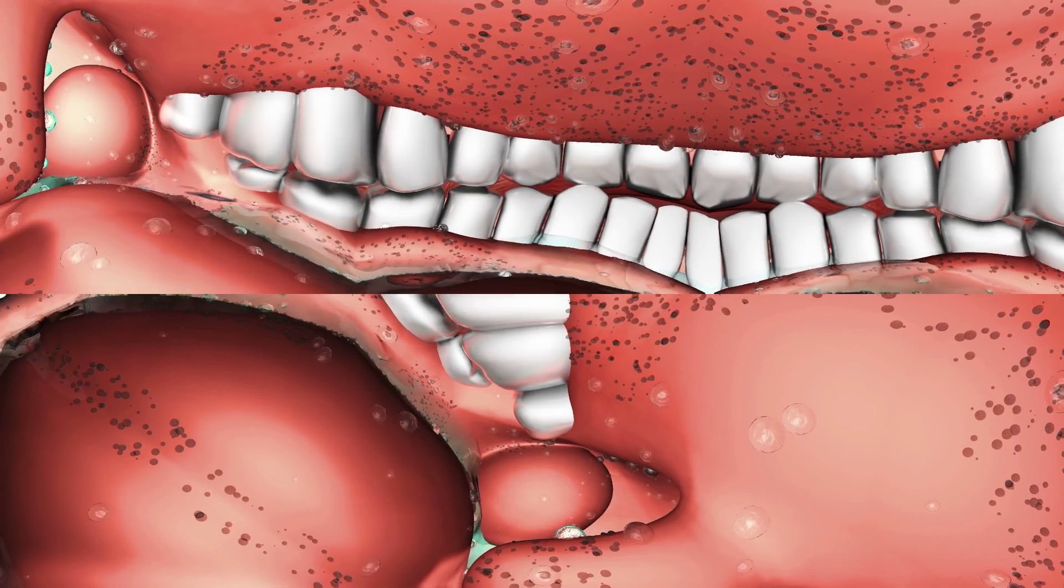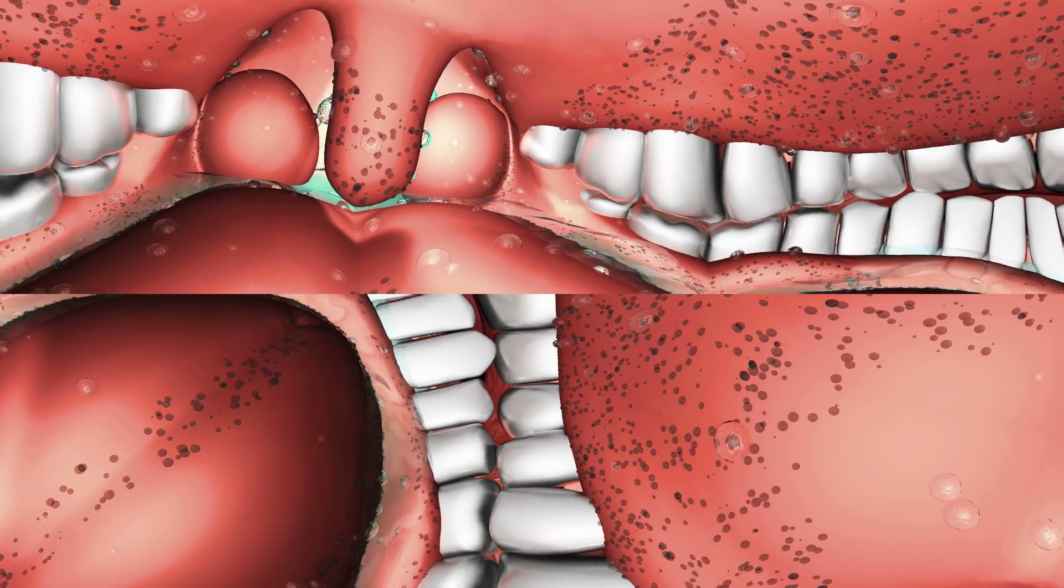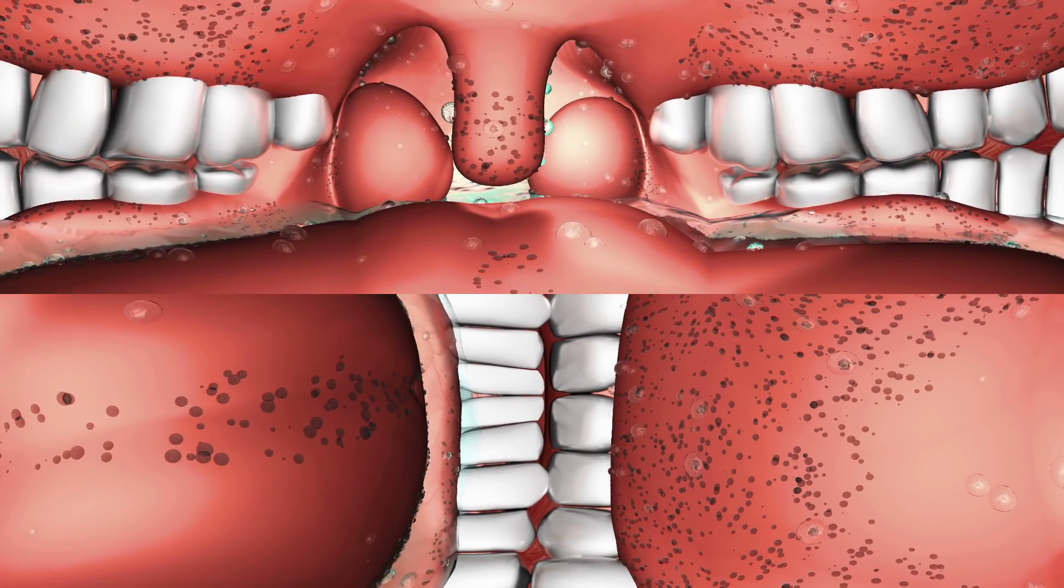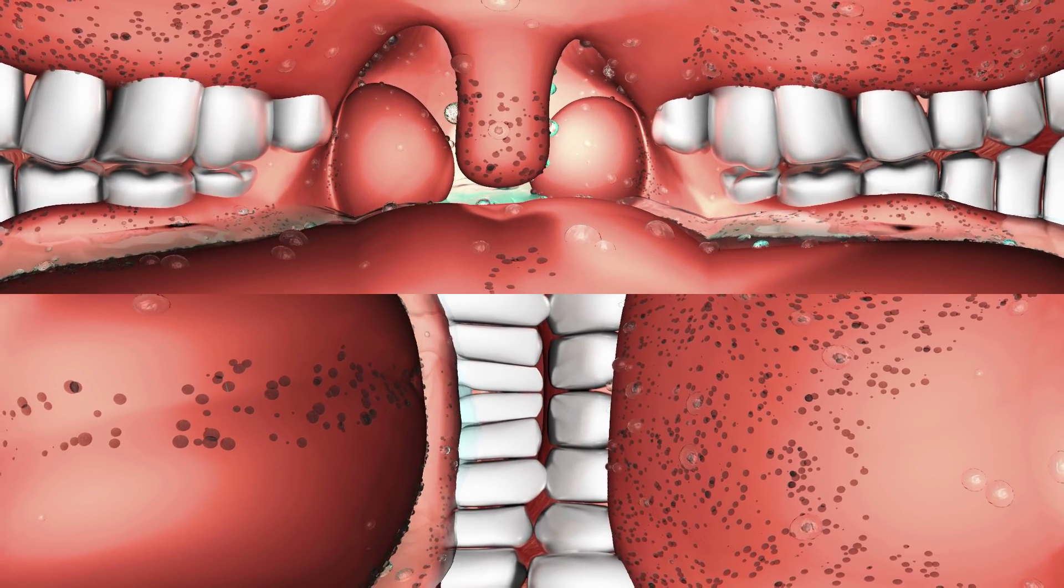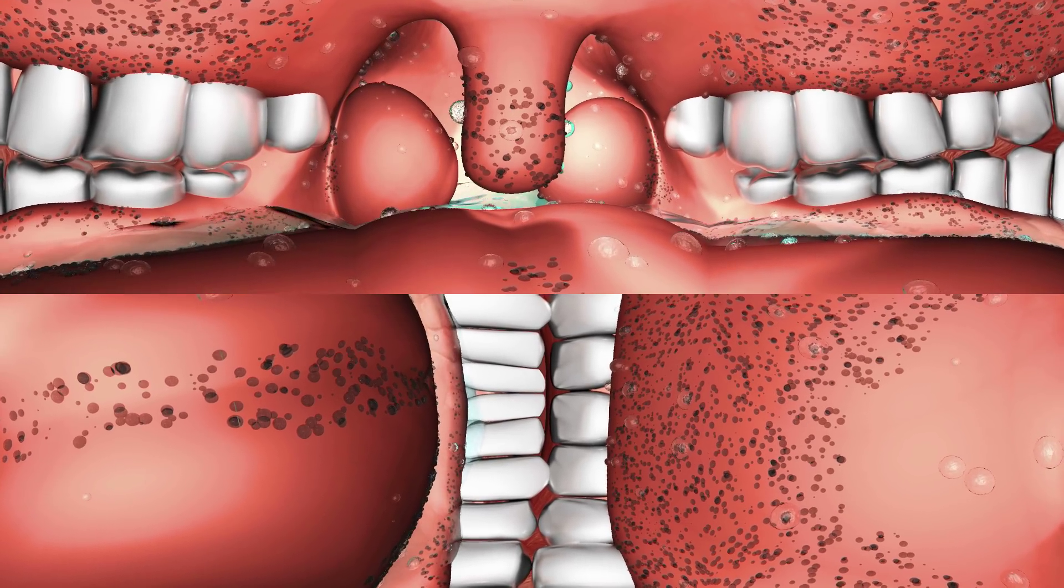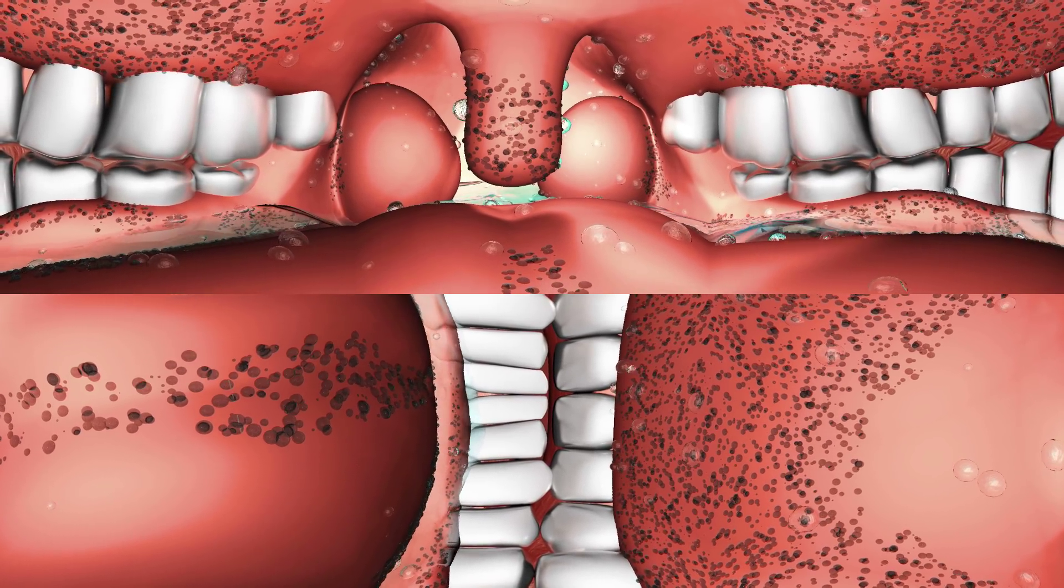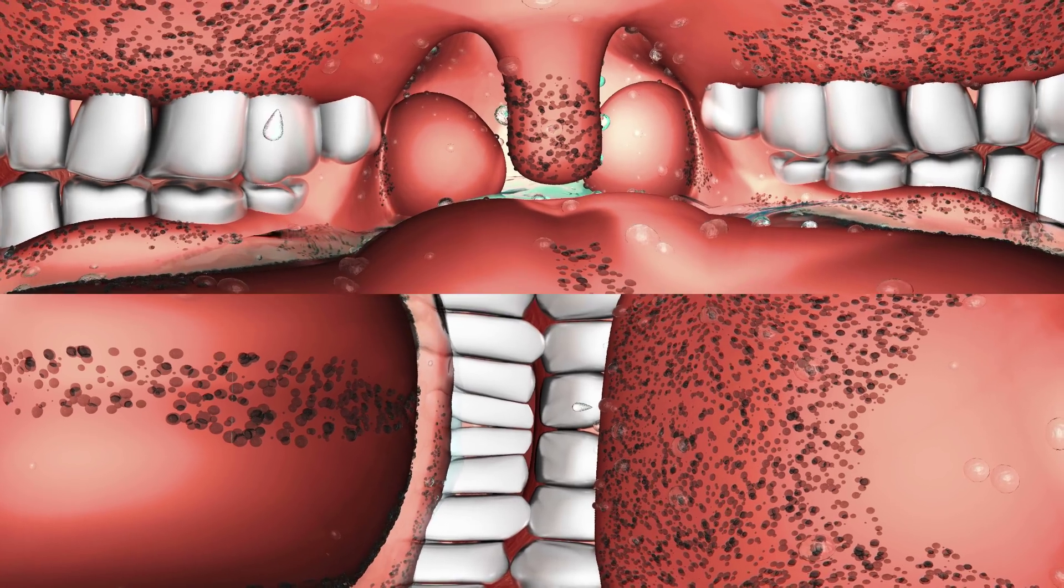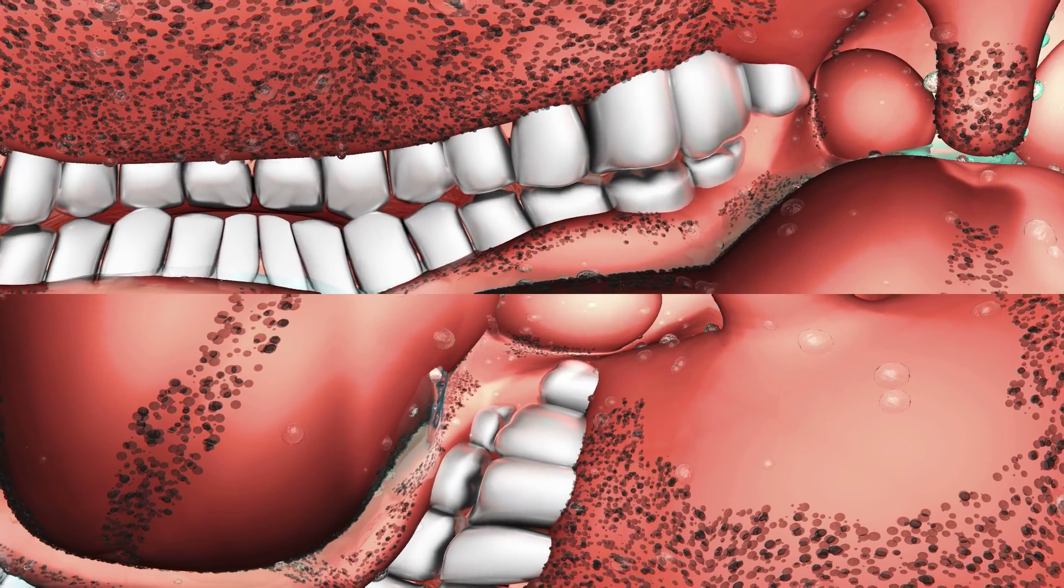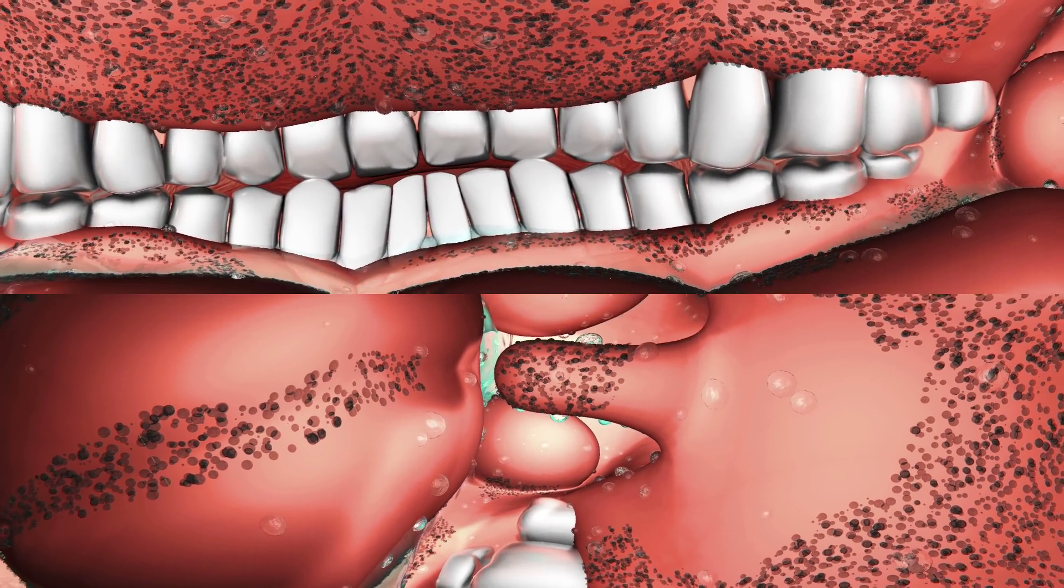These days, people clench their teeth while sleeping as a reaction to negative emotions, such as fear, anger, or disappointment. Well, I hope this guy isn't depressed or something. And don't worry about those tiny things you see. They're just bacteria. There are about 40,000 bacteria in the human mouth, and most of them aren't harmful.